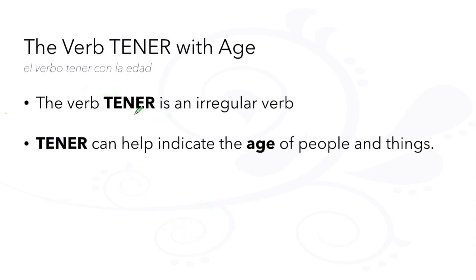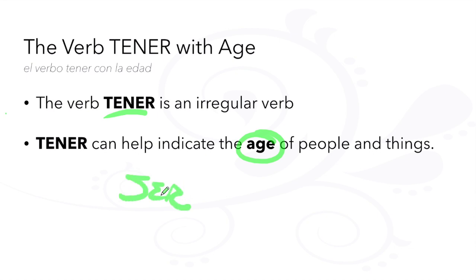Don't forget the verb tener is an irregular verb and indicates the age of people and things. We do not use the verb ser to tell age.